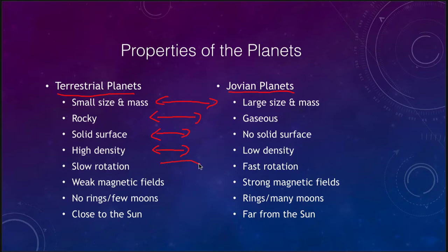All of the terrestrial planets have a slow rotation, while all of the Jovian planets have a faster rotation. In fact, even the fastest rotating terrestrial planet — the Earth — rotates slower than the slowest rotating of the Jovian planets. When we look at magnetic fields, the terrestrial planets have weak or no magnetic fields, while all the Jovian planets have strong magnetic fields.